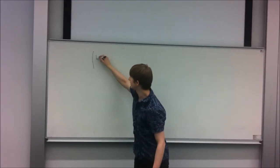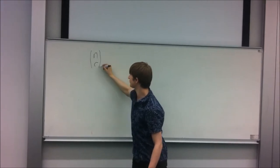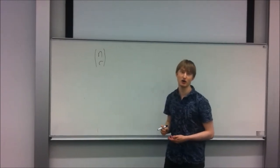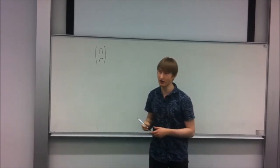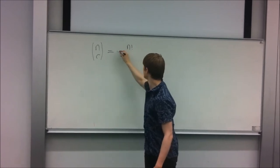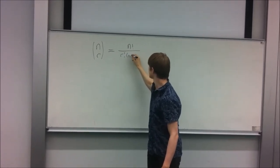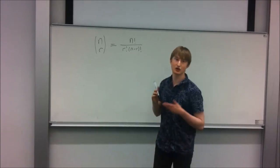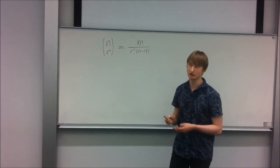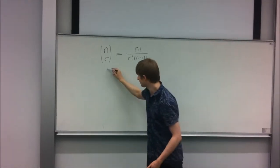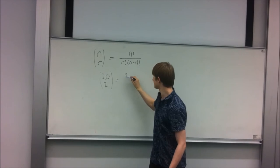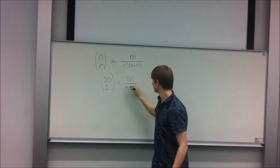This notation here is known as the binomial coefficient, often called n choose r, because it represents the number of ways to choose r items from a list of n items. It is equal to the following expression. So for example, if you have a list of 20 items on a shopping list and you want to see how many ways you can choose 2 items off that list, then that would be equal to 20 choose 2, which is evaluated in the following way.